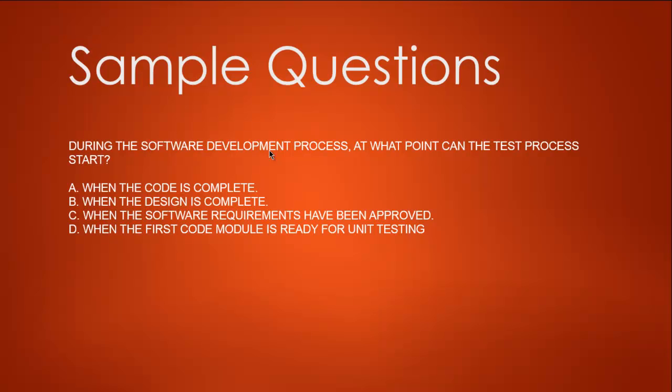C. When the software requirements have been approved, D. When the first code module is ready for unit testing. So you have options here. Option A says when the code is complete is not true—that would make the software under waterfall model, which is not going to cover many bugs. Then second, when the design is complete—